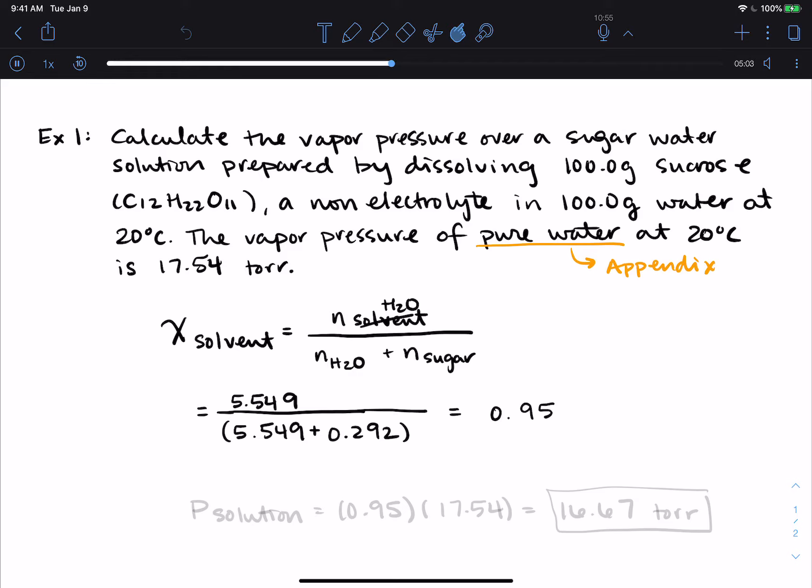So the mole fraction of water in the solution is 0.95. So out of our whole solution, about 5% of it is sugar and 95% of it is water. So my vapor pressure over the solution is 0.95, which is the mole fraction of the solvent, times 17.54, which is the vapor pressure of pure water at 20 degrees. And this gives me 16.67 torr as the vapor pressure over my sugar water solution.